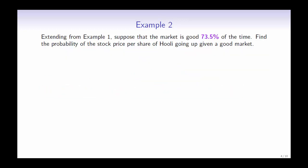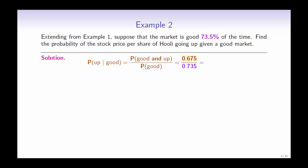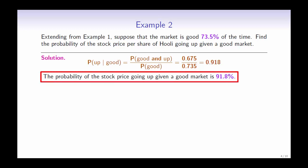Continuing on from example 1, suppose that the market is good 73.5% of the time. Find the probability of the stock price going up given a good market. Again, we will use the conditional probability formula. From example 1, the probability of a good market and the stock price going up is 67.5%, and the probability of a good market is 73.5%. So we have 0.675 divided by 0.735. Therefore, the probability of a stock price going up given a good market is 91.8%.